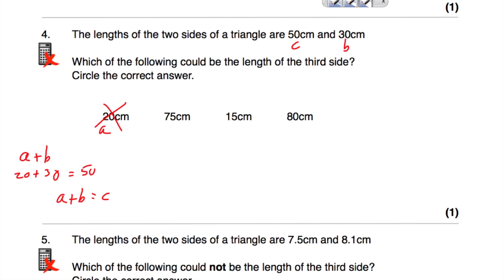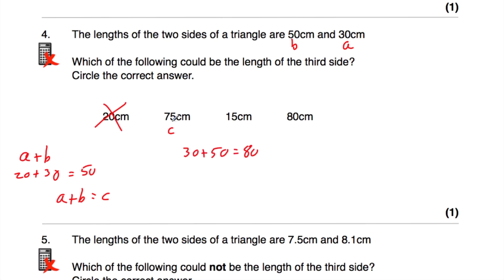Now let's consider 75cm. If we had 75cm, 50cm, and 30cm, the two shorter sides are 30 and 50, so A plus B equals 30 plus 50, which is 80. That is bigger than the longest side of 75cm — A plus B is bigger than C. So that triangle exists. I believe 75cm is going to be the answer, so I'm going to circle it and check the remaining options.